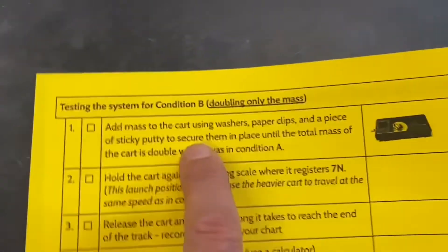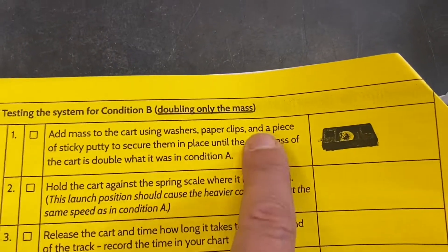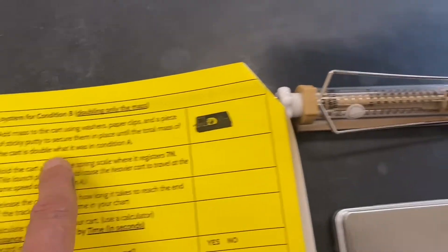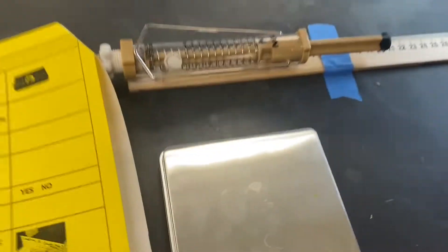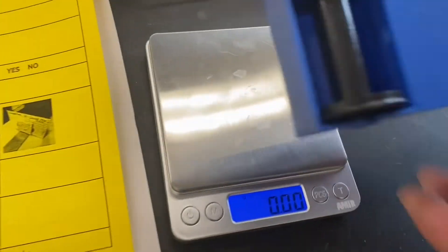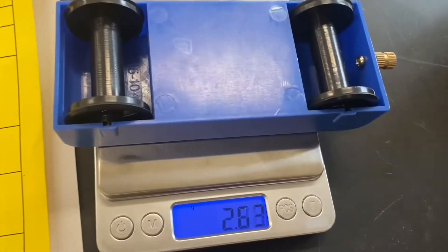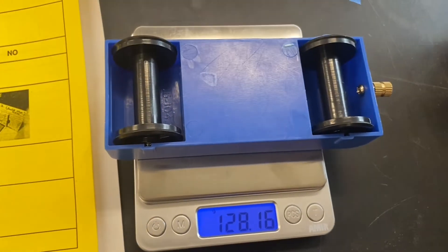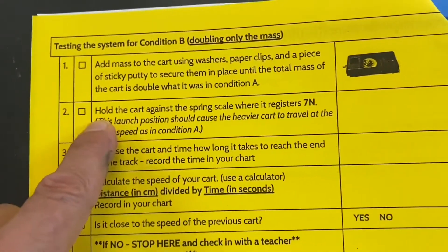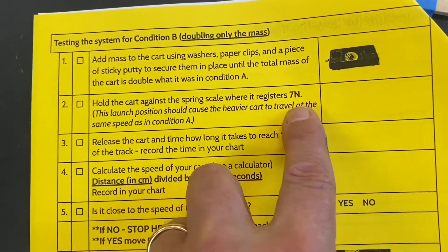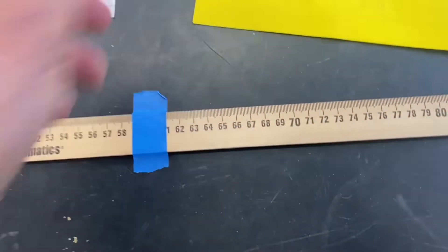So we're adding mass to the cart with washers and sticky putty and so forth to double the mass of the cart. So I think we did that already. Let's take a look. Let's weigh that thing. So that's about double, 64. So our next step is to take the weighted car and launch it with the spring scale by the pullback of seven newtons and see what happens.